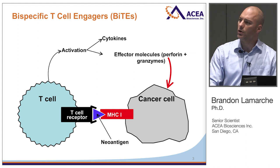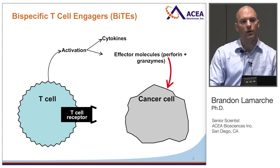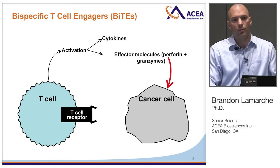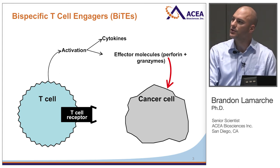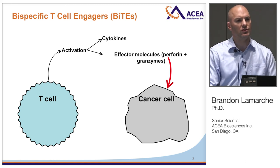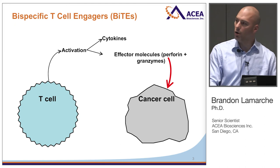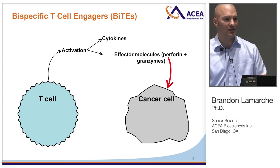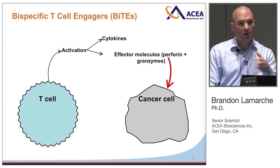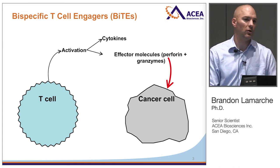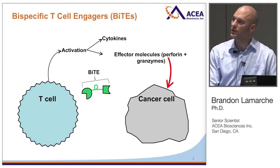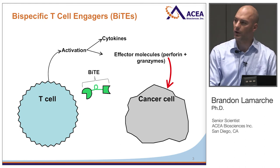When MHC1 is downregulated, the neoantigen is no longer displayed on the cancer cell surface, and the T cell receptor is not able to do its job in surveillance. An important question is: are there ways to engineer an approach that would allow for a robust, specific T cell response even when the T cell receptor is not functioning? One method for achieving this is the use of the bispecific T cell engager.